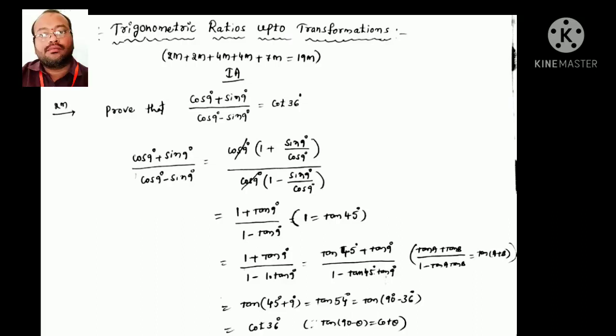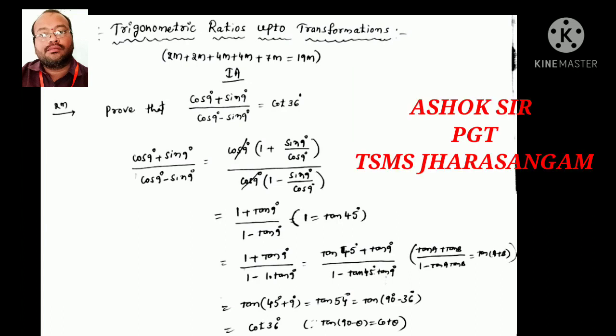First question: prove that (cos9° + sin9°) / (cos9° − sin9°) = cot36°. From the numerator and denominator, take cos9° common. Then we get (1 + sin9/cos9) / (1 − sin9/cos9). Since sin/cos = tan, this becomes (1 + tan9°) / (1 − tan9°).